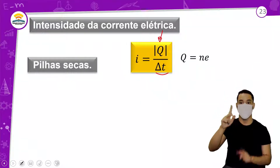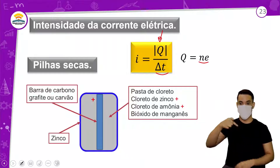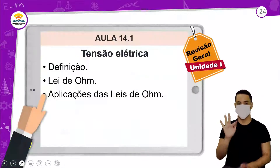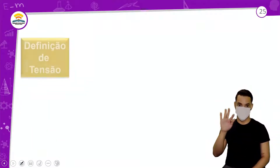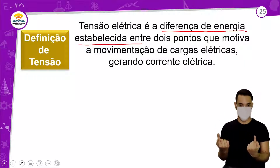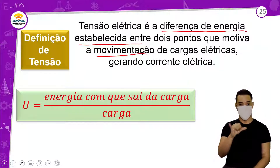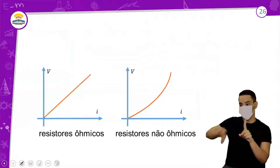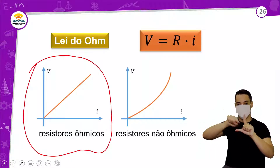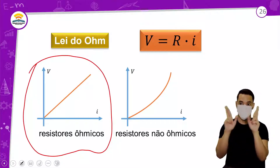Lembrando que Q é N vezes Z. Se me der a carga, ótimo; se não, vou usar o número de elétrons vezes a carga elementar. Tensão elétrica e lei de Ohm: tensão elétrica é a diferença de energia estabelecida entre dois pontos que motiva a movimentação de cargas elétricas, gerando corrente elétrica. Resistor ômico é linear. Se ele não for linear, não é ômico — vai ter uma curva com valores de resistência diferentes para tensão e corrente diferentes.